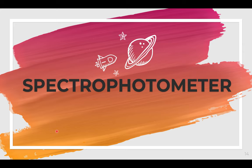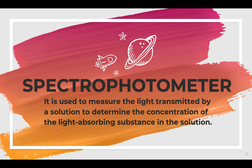So what is your spectrophotometer? It is used to measure the light transmitted by a solution to determine the concentration of the light-absorbing substance in that solution. By this time, you should understand how the spectrophotometer achieves that: it measures the light transmitted (transmittance), knowing that some light is absorbed (absorbance), to determine the concentration of the analyte.